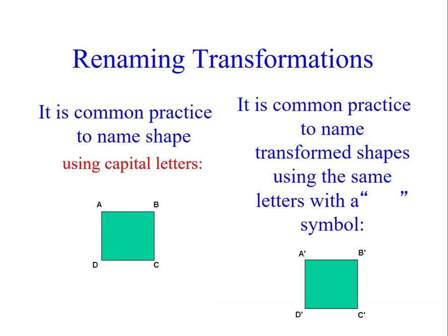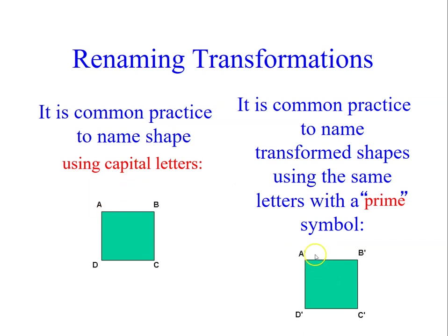So renaming — we have renaming the transformation. It will give you from the original shape going to the new shape, or transformation. We will write a prime in the letters using capital letters, and after transformation it will give us A prime, B prime, C prime, and D prime — not Optimus Prime! So it is common practice to name transformed shapes using the same letters with a prime symbol.